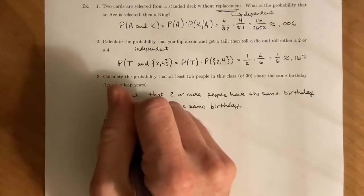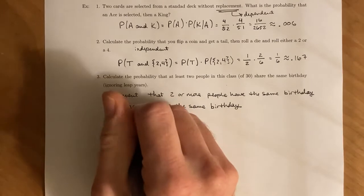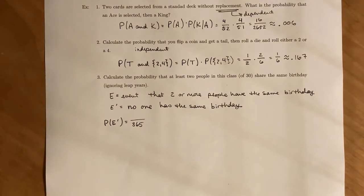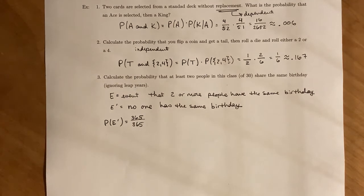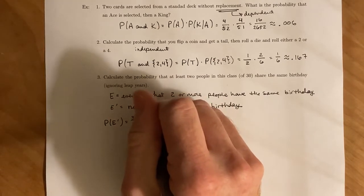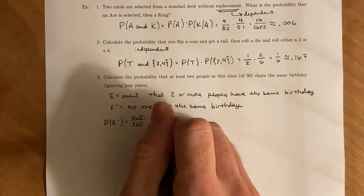So what we're going to do is we're going to calculate the probability of E prime. So first we're going to just choose one person at random. And since there's 365 days of the year, the probability that you choose one day out of the year is going to be 365 out of 365. Now, once that day has been selected, you move on to somebody else and choose their birthday. And it's not going to be exactly the same. So there's going to be only 364 possible days left out of the total of 365 days.